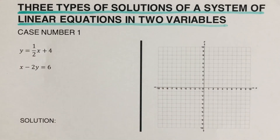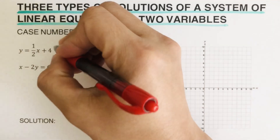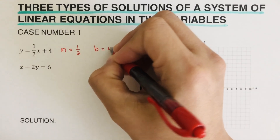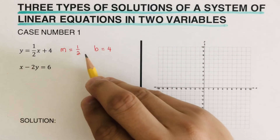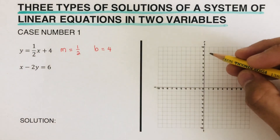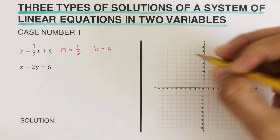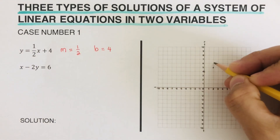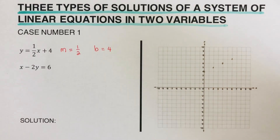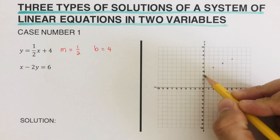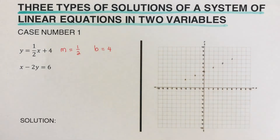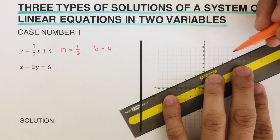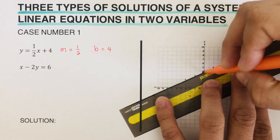If we're going to graph the first line, our slope m is one half and the y-intercept is four. We're going to start by putting a dot on the y-intercept, which is four. Then since the slope is one over two, we go up one, right two. We can also go the other way: down one, left two. Then we connect these dots to draw the line.